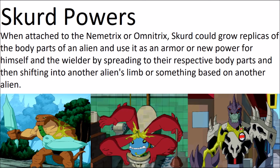The next gimmick from Ben 10 Omniverse is Skurd powers. Skurd is a character introduced during the last season of Ben 10 Omniverse who attached itself to the Omnitrix. When attached, Skurd could grow replicas of the body parts of an alien and use them as armor or new powers for himself and the wielder, by spreading to their respective body parts and shifting into another alien's limb.